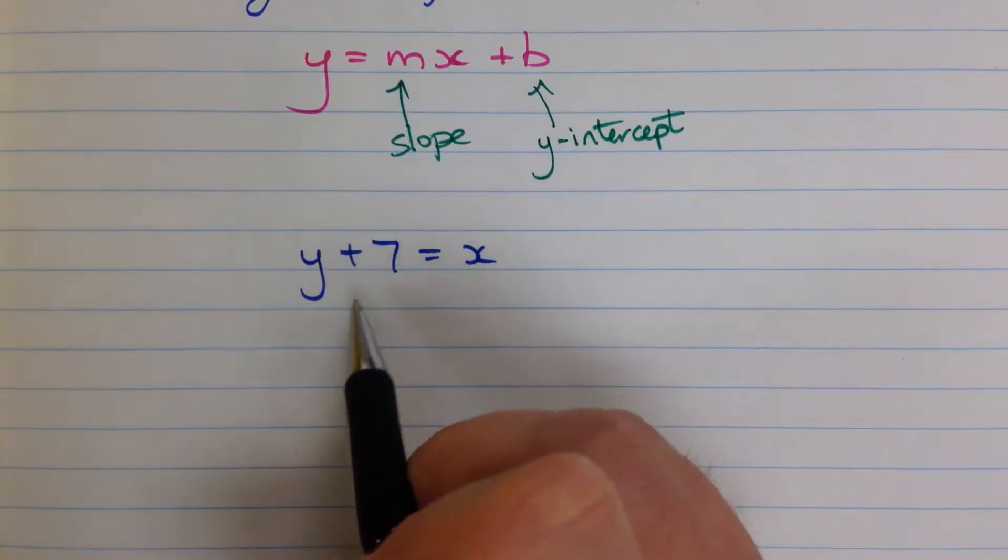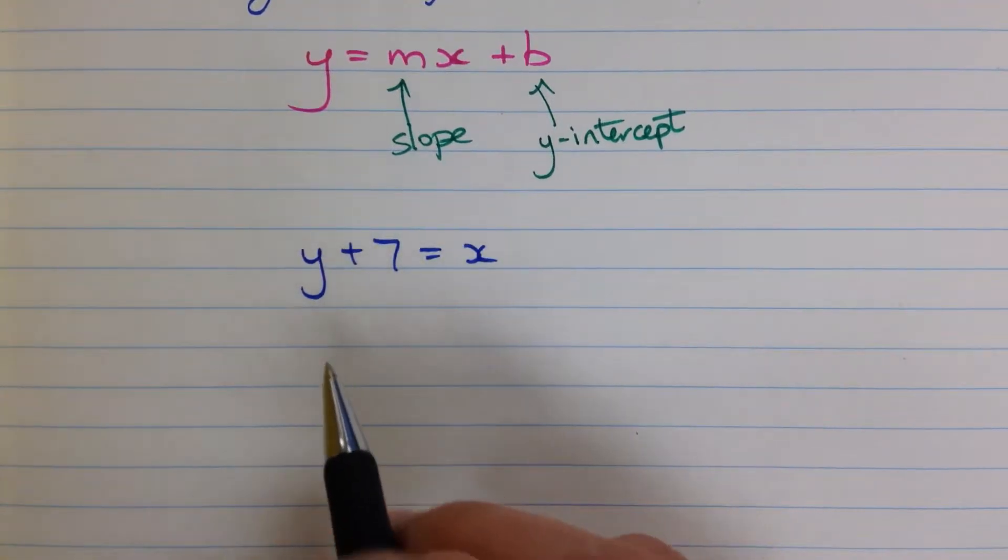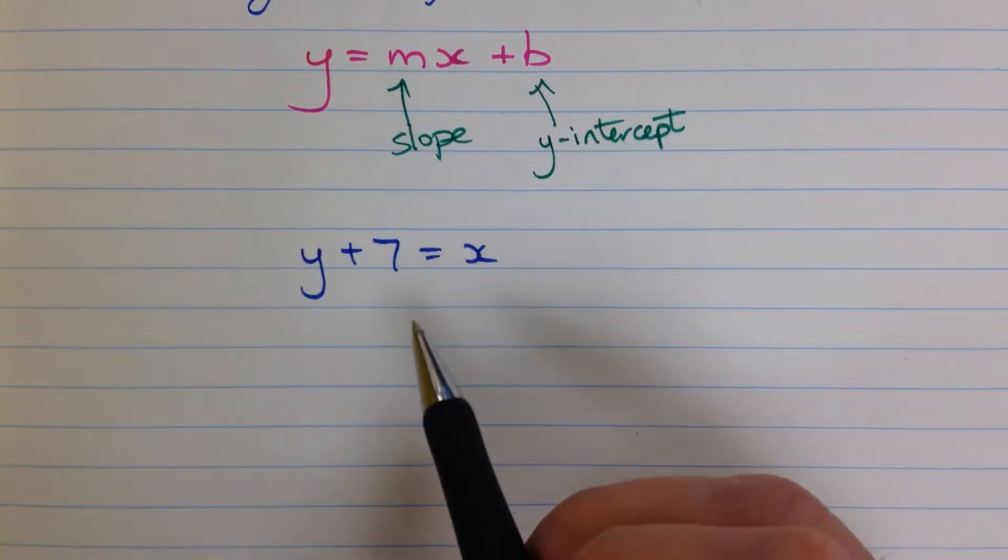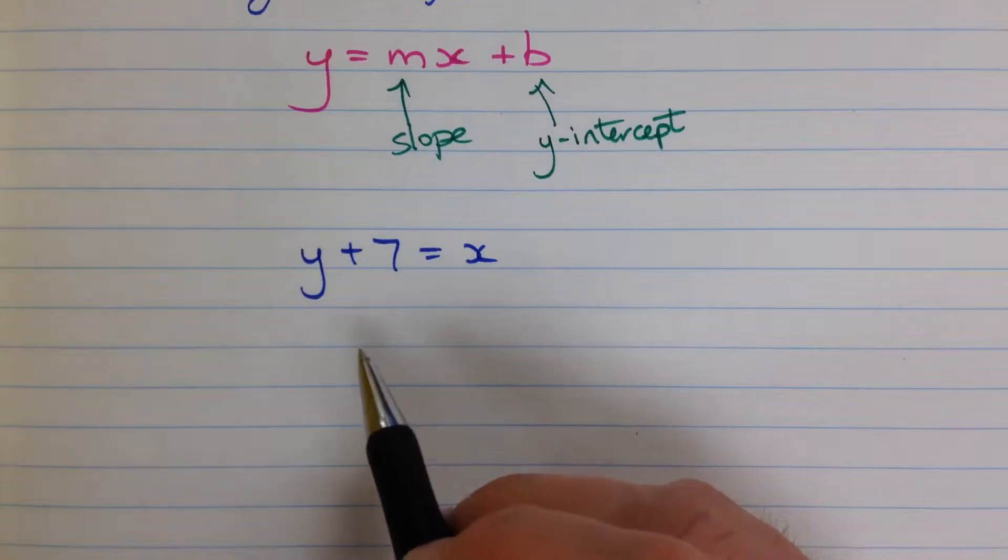It's added to this side, so we're going to subtract it to get rid of it, but we have to do that, of course, to both sides. Anything you do in an equation, you need to perform the same operation on both sides.